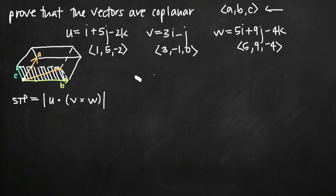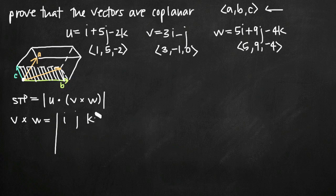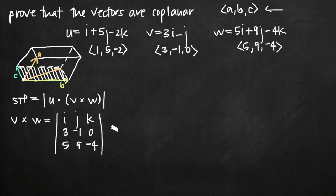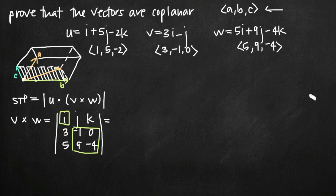Now we find the cross product of V and W. We set up a 3×3 matrix with i, j, k in the first row, then V = (3, -1, 0) and W = (5, 9, -4) in the second and third rows. Expanding: for i, we get (-1)(-4) - (9)(0) = 4 - 0 = 4. For j, we get 3(-4) - 5(0) = -12 - 0 = -12, but we subtract this term. For k, we get 3(9) - 5(-1) = 27 + 5 = 32.